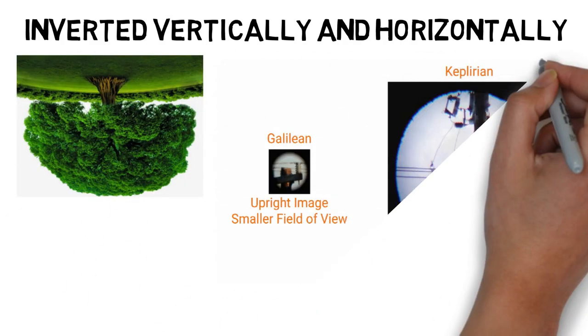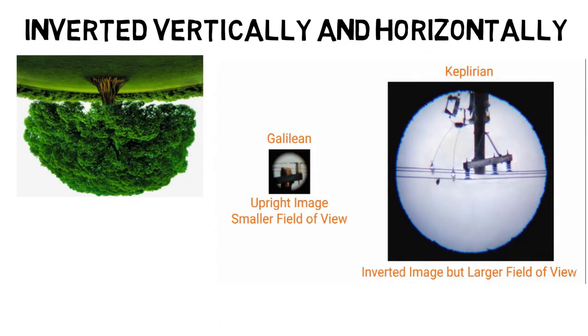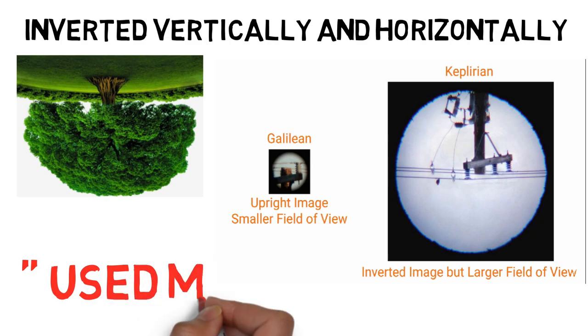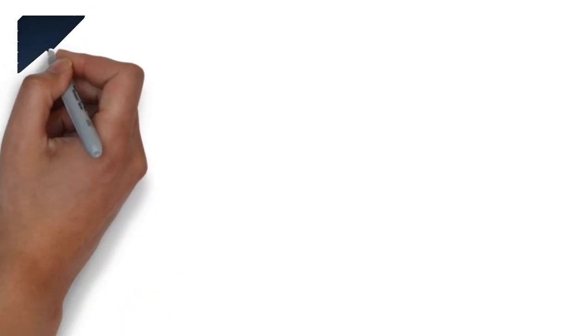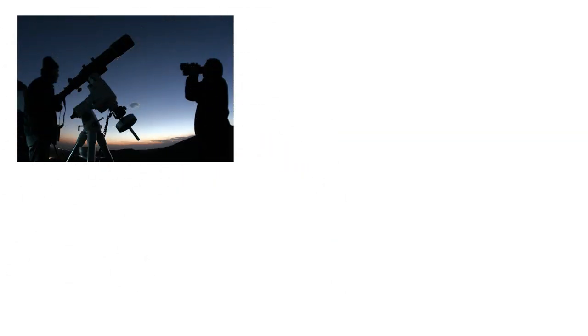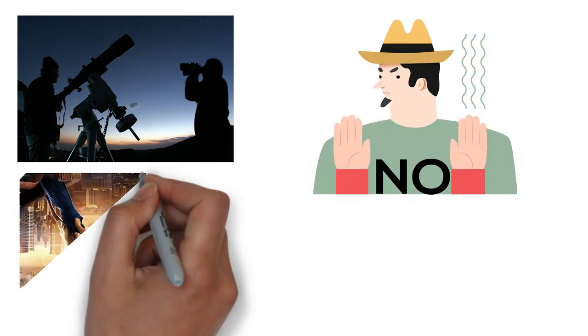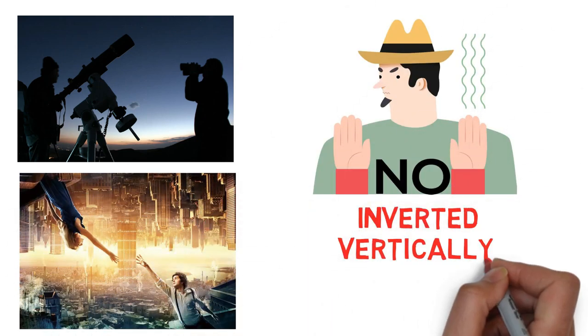But the image of Keplerian refractor telescope seems inverted, both vertically and horizontally. But still, Keplerian refractor telescopes are used more than the Galilean refractor telescope because of its large field of view, and it is most used by astronomers, because no matter the image of space objects looks inverted.